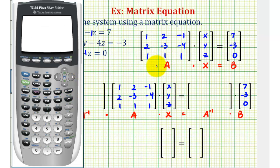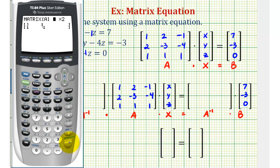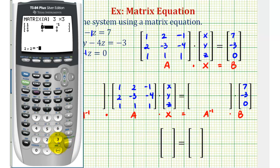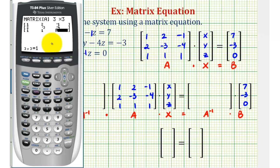The first step is to enter matrix A, and we'll also enter matrix B. So we'll press second matrix, right arrow twice for edit, press enter, enter the dimensions: 3, enter, 3, enter, then enter in all of the elements. It's important to double check this because if one element is incorrect, we'll end up getting the wrong answer.